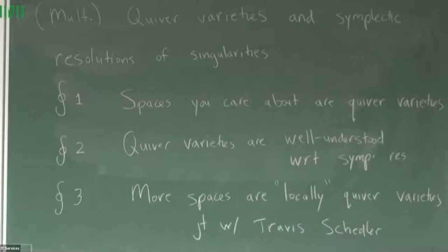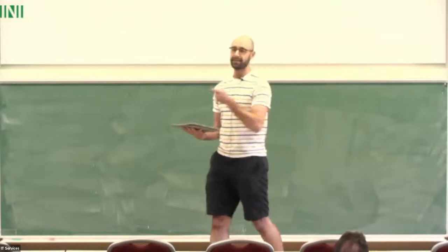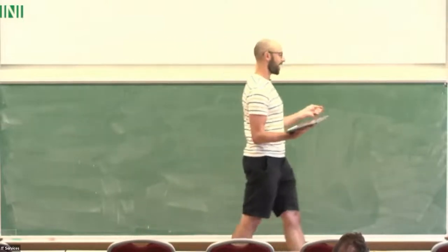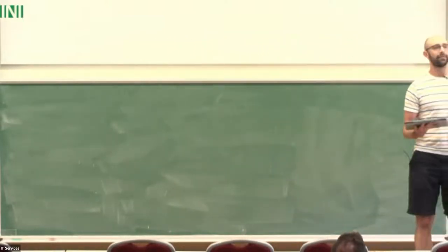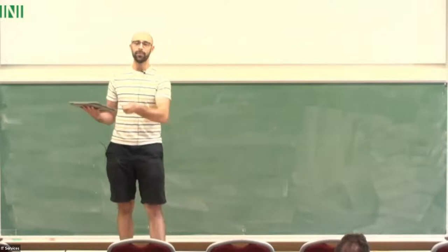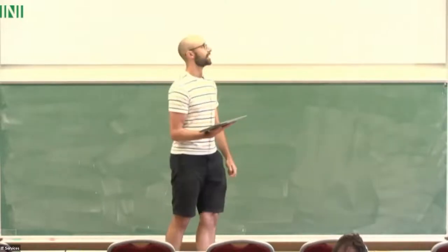The talk is split up into three main ideas or sections. First, spaces that you hopefully care about can be realized as quiver varieties. That's kind of a nice idea already — spaces coming from different places have this uniform description. Section two is about what that buys you: if you realize something is a quiver variety, you have a leg up in constructing symplectic resolutions of it. Part two is work of Gwen Bellamy and Travis Schedler, which shows in certain cases there aren't symplectic resolutions, but in other cases you can build them.